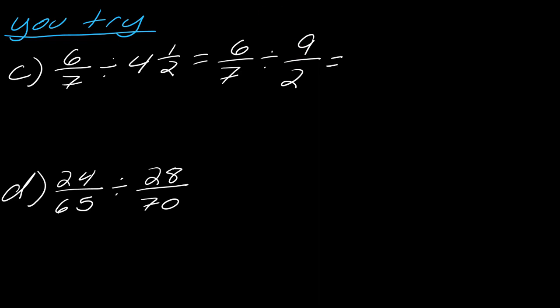Now, I can flip the second fraction. So, this becomes 6 over 7 times 2 over 9. And, now that I'm looking at this, I can see that between the 6 and the 9, I can divide both by 3.